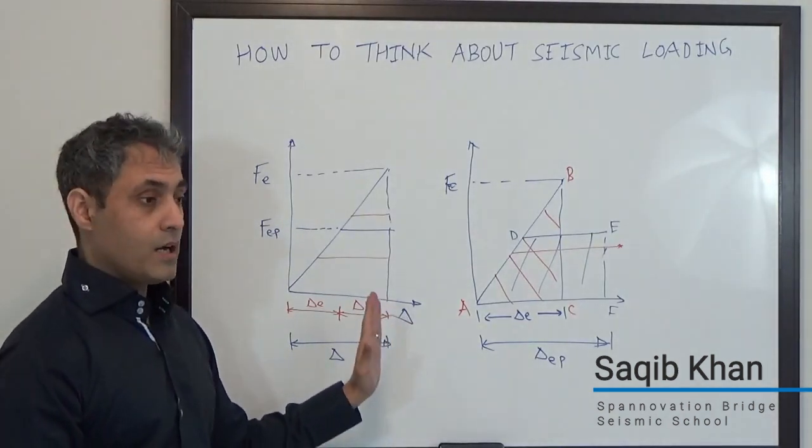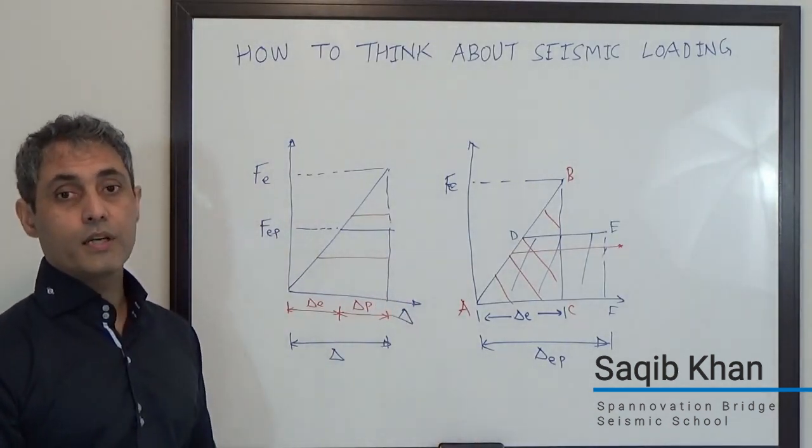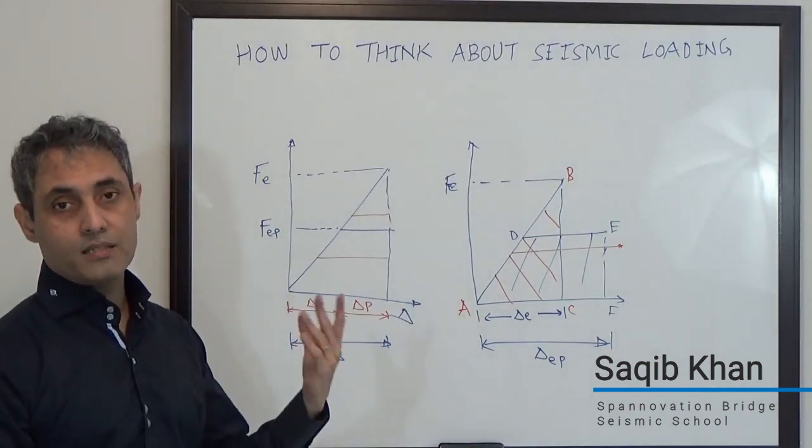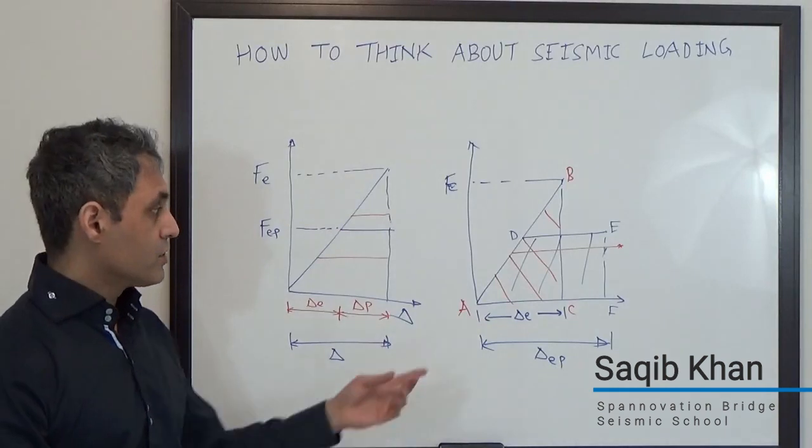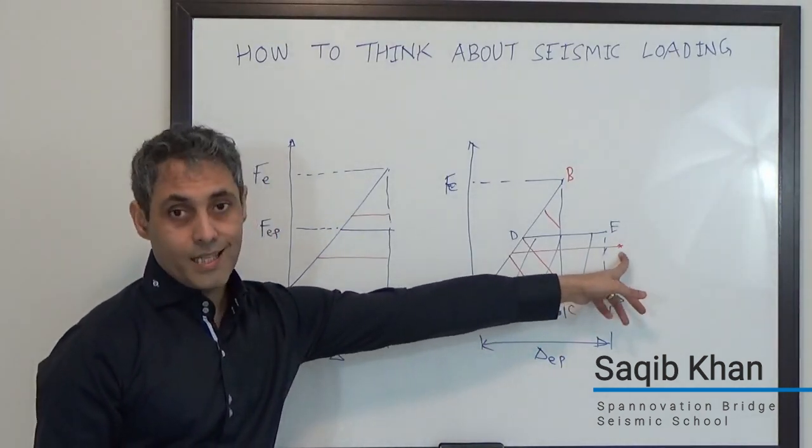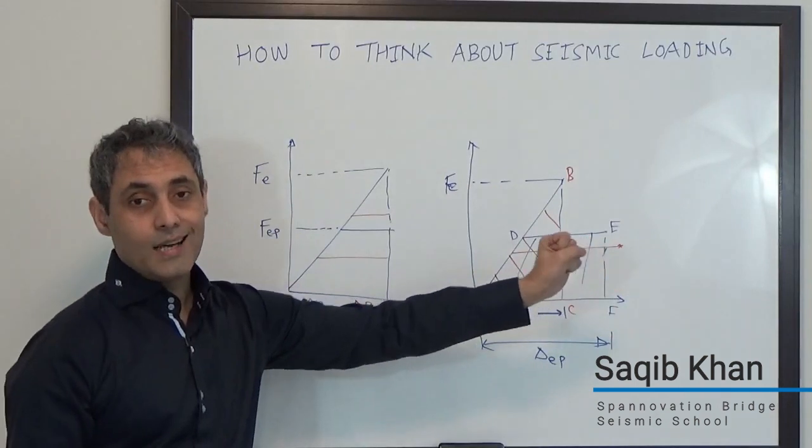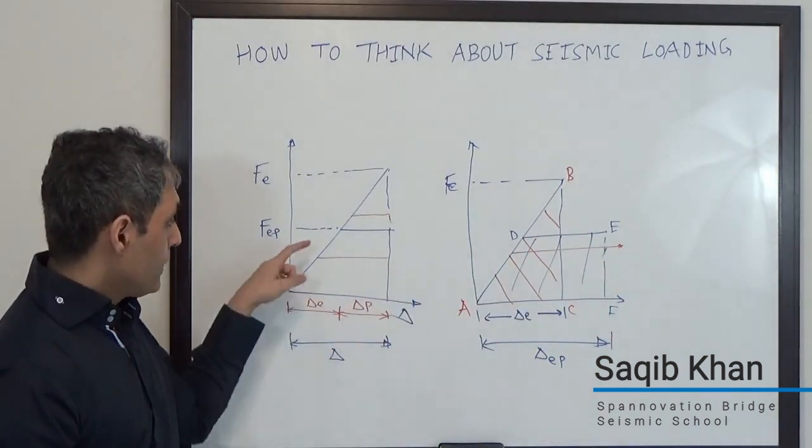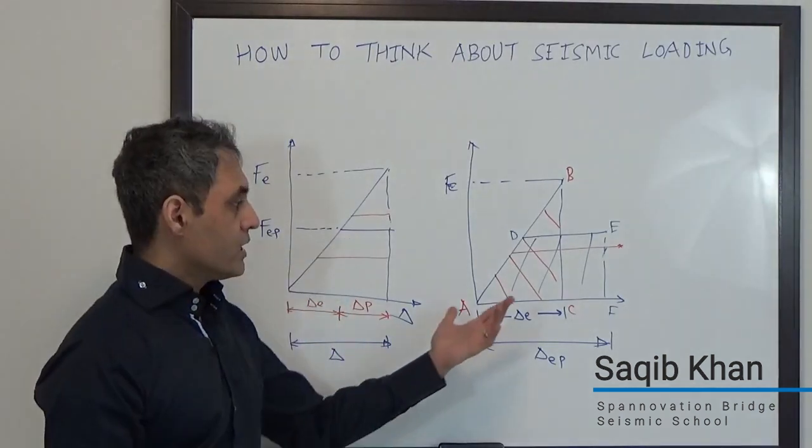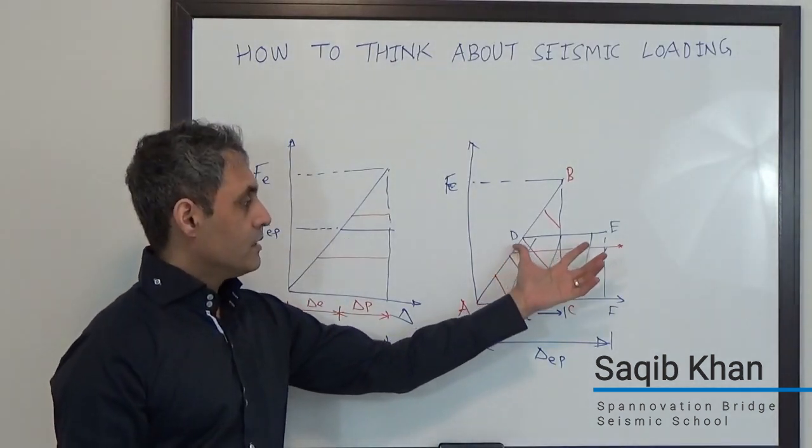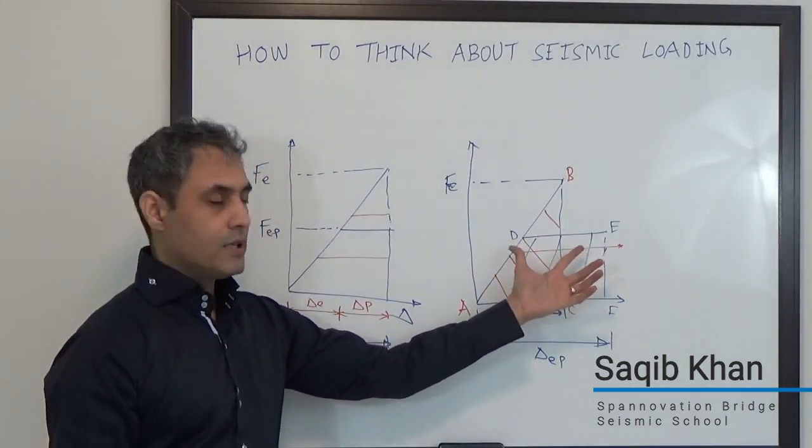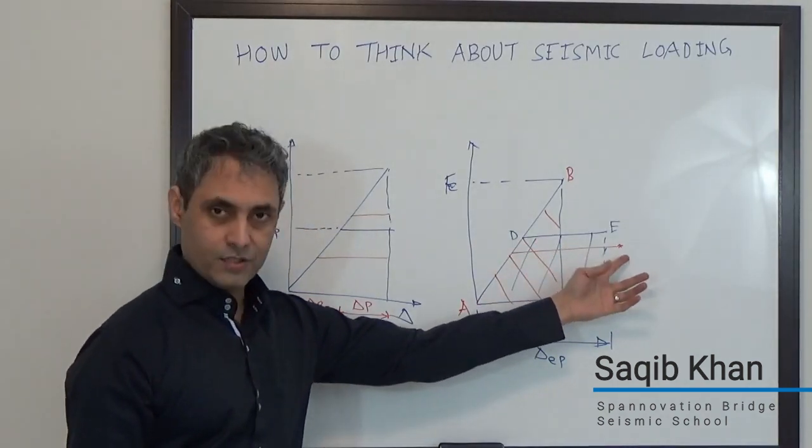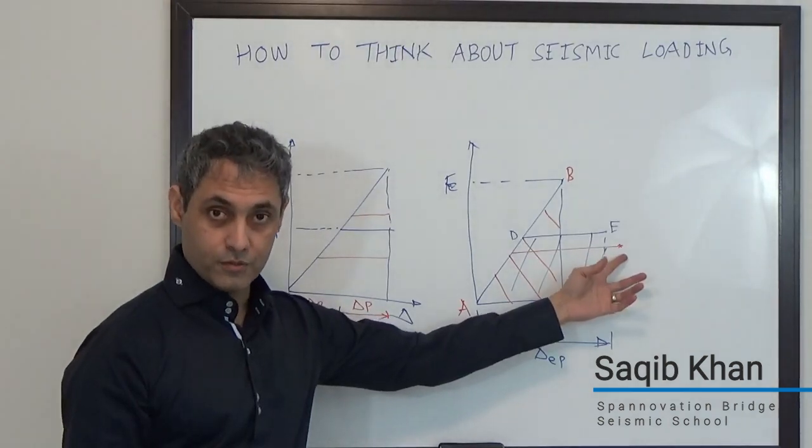If your structure does not have enough ductility, if it's going to have any issue with overstrength shear or capacity-protected design issues, when it reaches or tries to get to that displacement level, that's where we're going to run into issues. The issue is not going to be the initial strength. The issue is that you need to have enough capacity in the system to displace to the point that the earthquake is going to push it to.